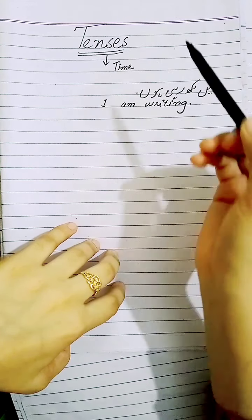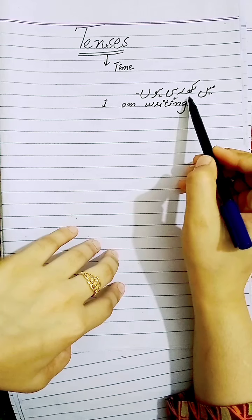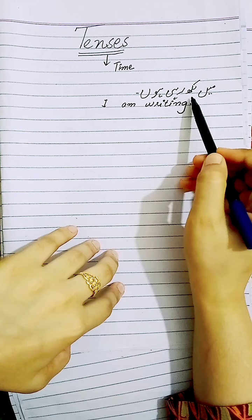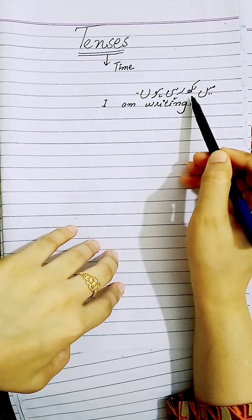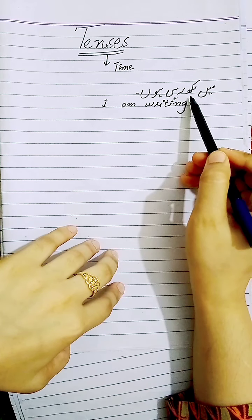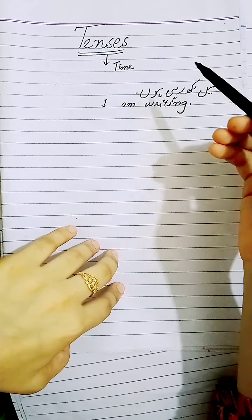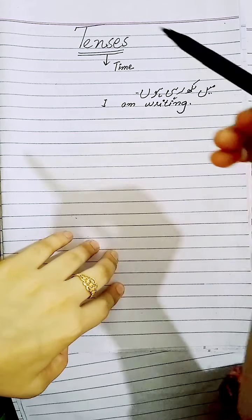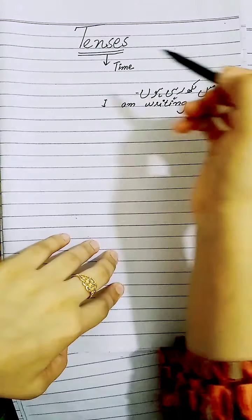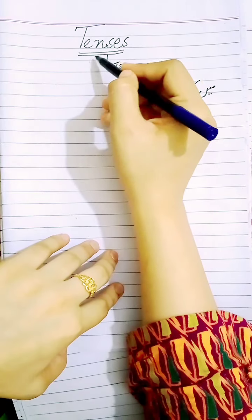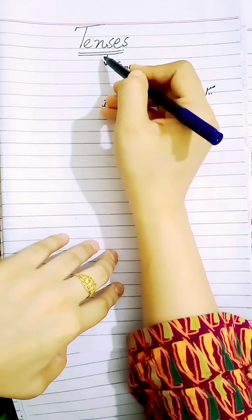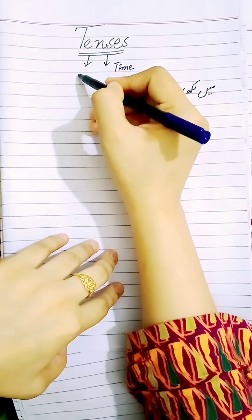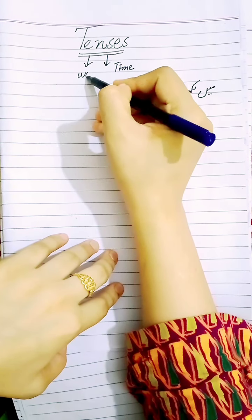Now the second point we will clarify is: what is the work? What is my action verb here? It is 'writing' — 'لکھنا'. That is the work happening in the sentence. So we can say that tenses, along with showing time, also tell us about the work.